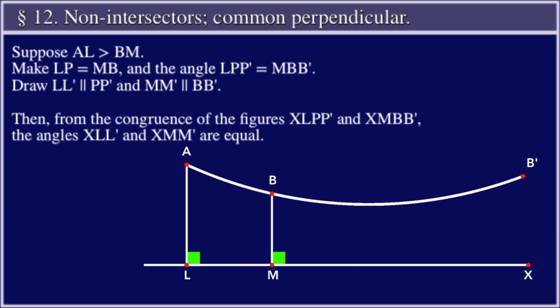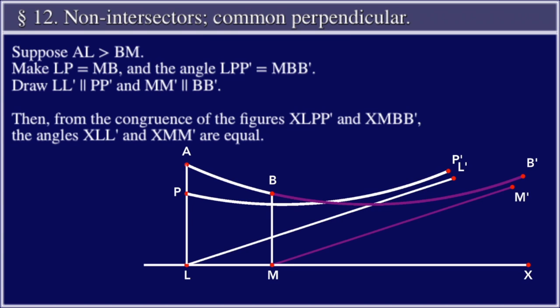Suppose AL is greater than BM. Make LP equal to MB and the angle LPP' equal to the angle MBB'. Draw LL' parallel to PP' and MM' parallel to BB'. Then, from the congruence of the figures XLPP' and XMBB', the angles XLL' and XMM' are equal.